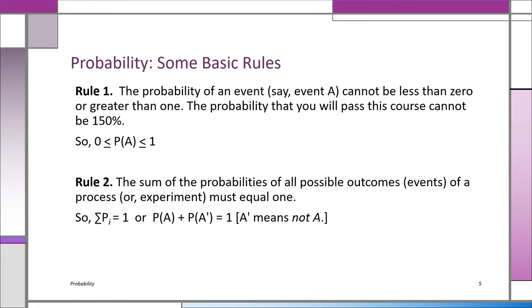Rule two: if you take all the possible outcomes of a process and add up all their probabilities, it must equal one — 100% is the total universe. For a die with six equally likely sides, one-sixth plus one-sixth plus one-sixth and so on equals 100%. If you toss a coin, the probability of a head is one-half and the probability of a tail is one-half; together the sum of the probabilities is one.